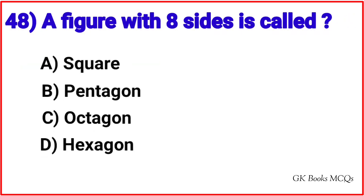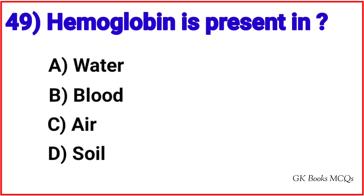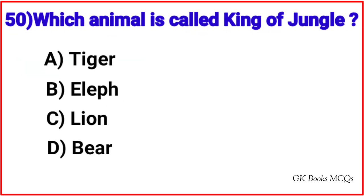Question 48: A figure with eight sides is called? Correct answer is option C, Octagon. Question 49: Hemoglobin is present in? Correct answer is option B, Blood. Question 50: Which animal is called King of the Jungle? Correct answer is option C, Lion.